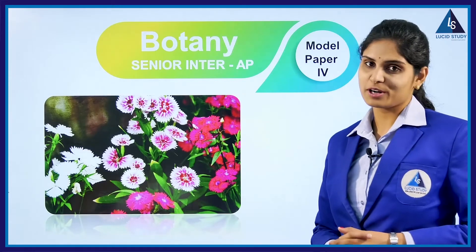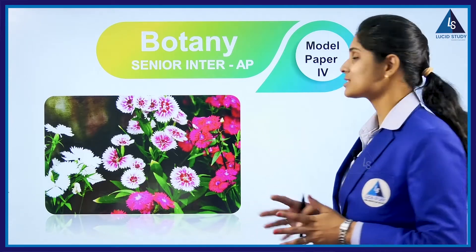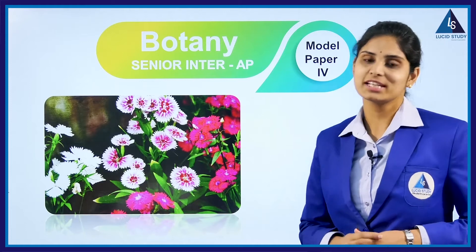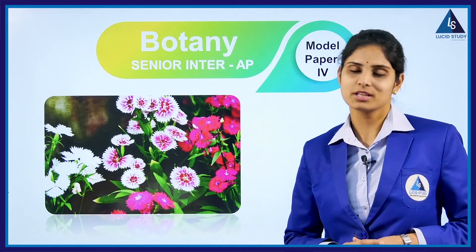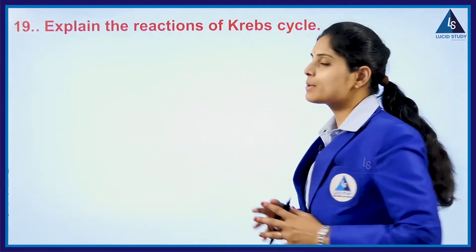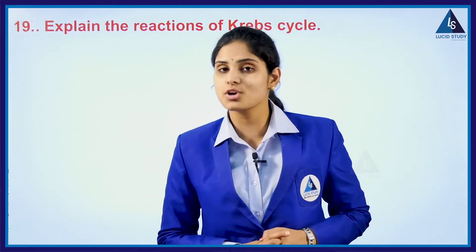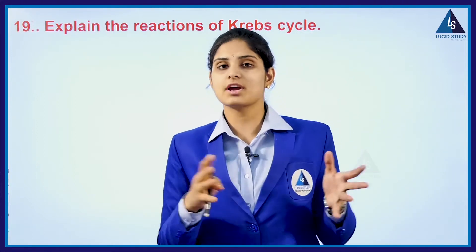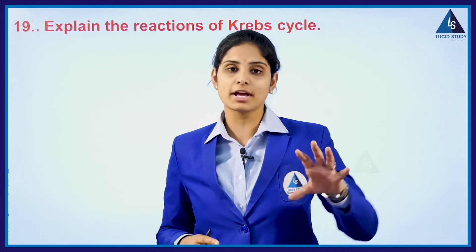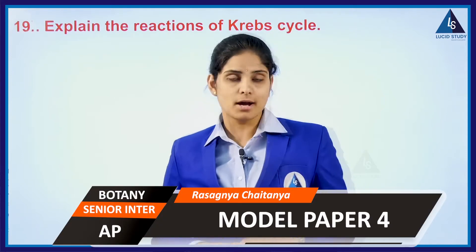Welcome to the session of model paper 4. Here we are going to discuss the reactions of Krebs cycle. So what is Krebs cycle? It is also called as the tricarboxylic acid cycle, which takes place in the matrix of the mitochondria.